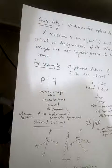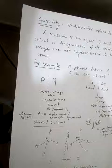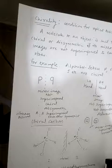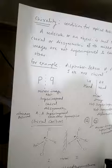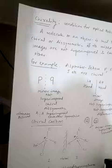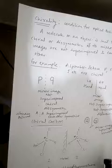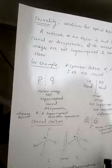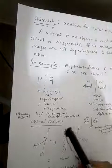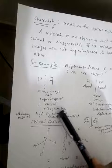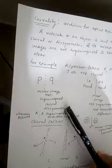Chirality — chirality is the condition for optical activity of a molecule. A molecule or an object is said to be chiral or dissymmetric if its mirror image is not superimposable on itself. For example, alphabet letters P, F, and J are chiral because their mirror images are not superimposed on each other — they are dissymmetric.